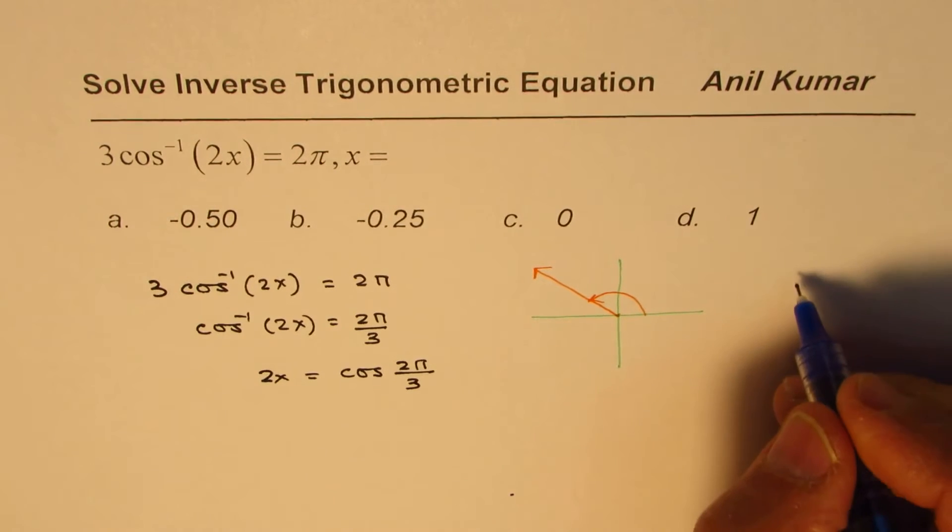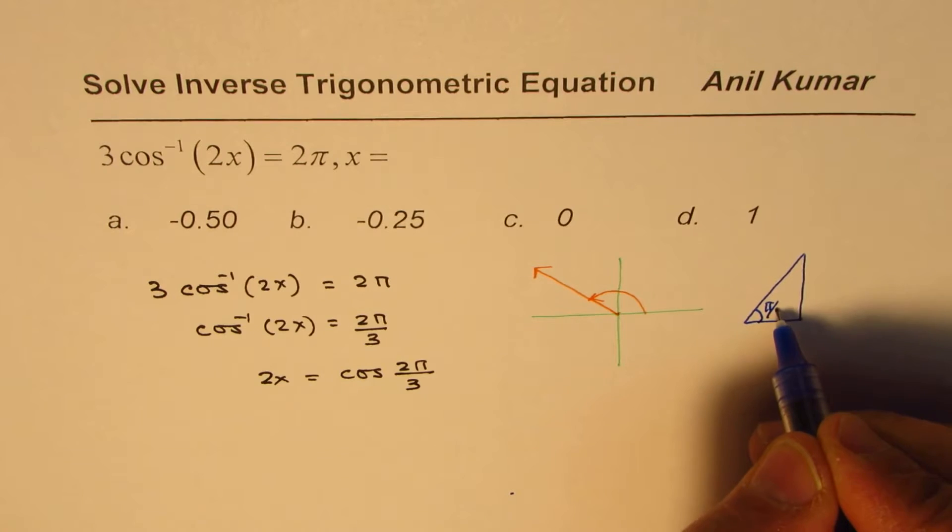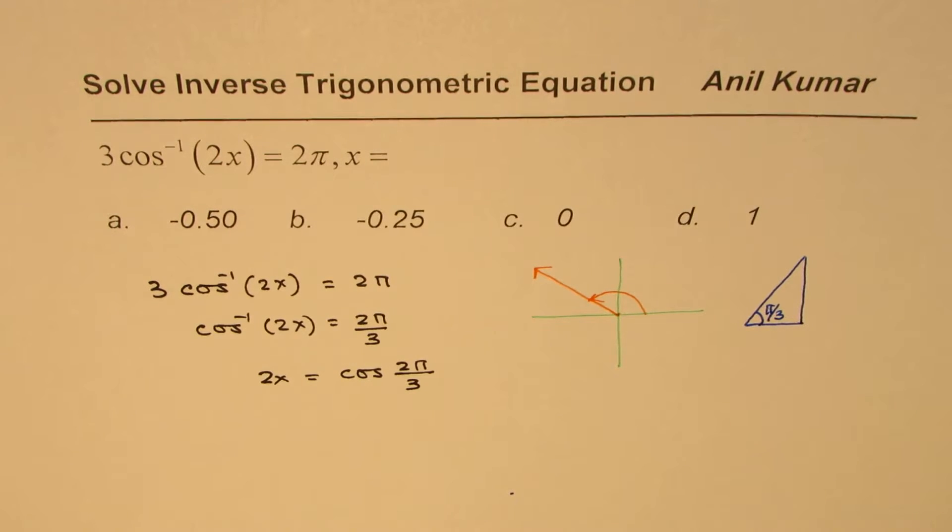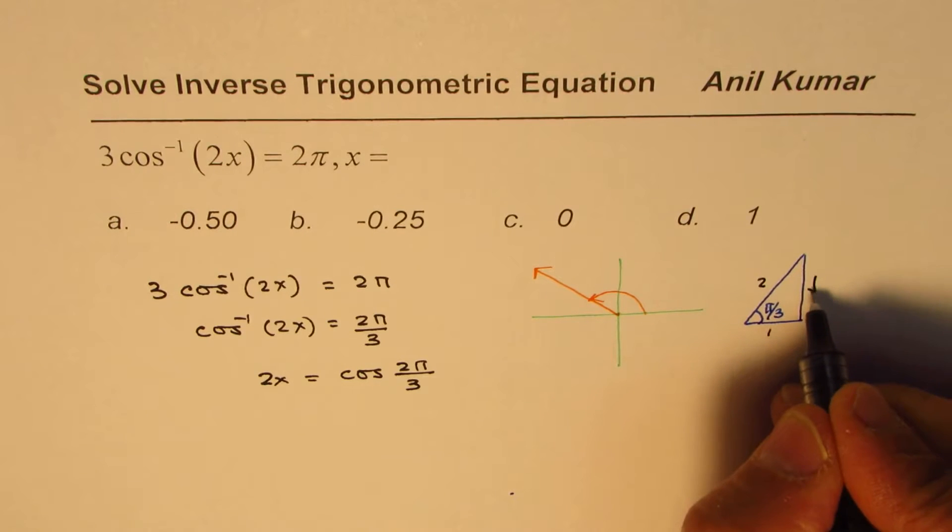The triangle, which is a special triangle for π by 3, gives you the side ratios as 1, 2, and square root of 3. So cos π by 3 is 1 over 2.